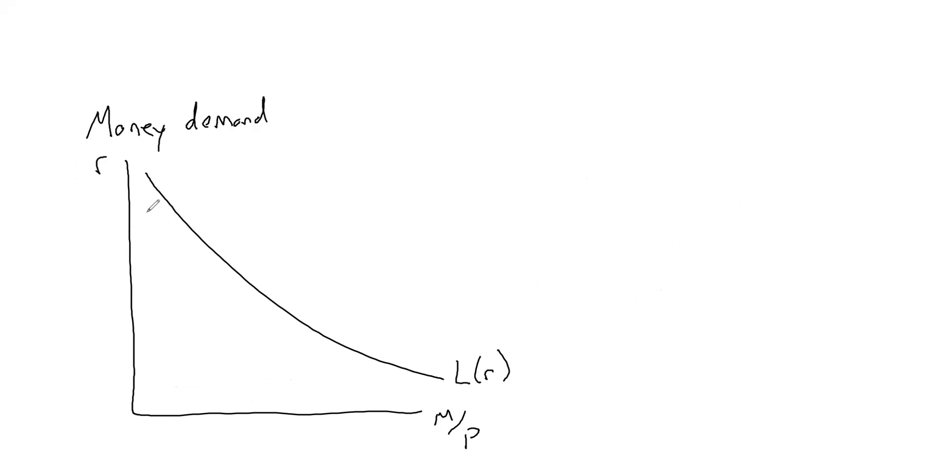It's just a downward sloping liquidity function that's a function of the interest rate. So when it's really expensive to hold money, when interest rates are really high, we're going to hold less money. Our real money balances are going to decline. When it's really cheap to hold money, when interest rates are really low, everybody's going to hold a lot of money, and real money balances are going to be very high.